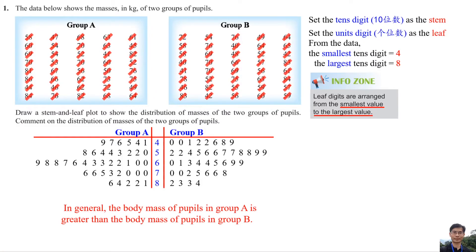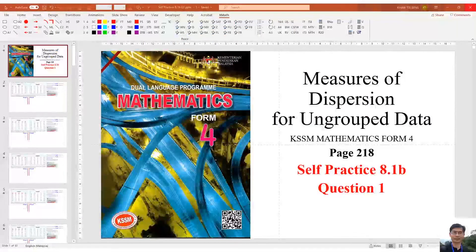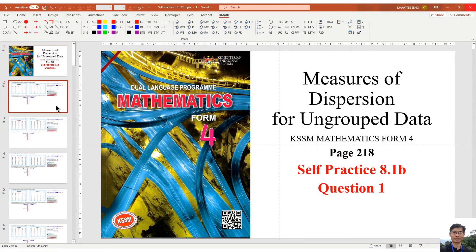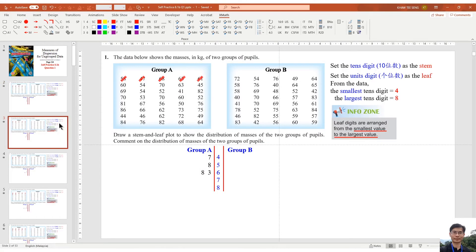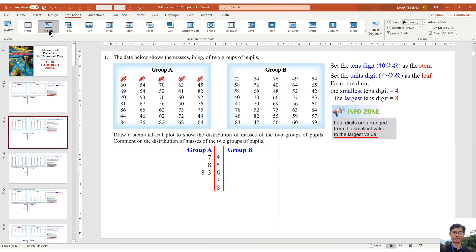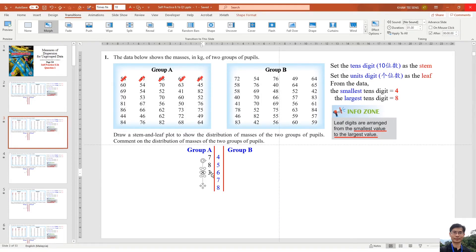I'll show you how I did all the animations — I spent more than 2 hours doing all of this. This is the first page. I do it one by one. When coming to 63, because I need the 3 to be placed to the right of number 8, I duplicate the slide and in the transition I use Morph. After that, I move 8 to the left and put 3 here.